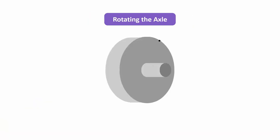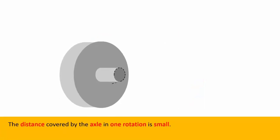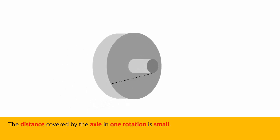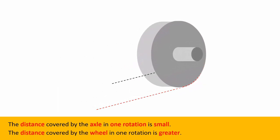Now, what if we turn the axle instead of the wheel? Consider this wheel with this axle attached to it. When the axle completes one rotation, the wheel does as well. But when the axle completes one rotation, the distance covered is small as the axle's diameter is small. On the other hand, one rotation of the wheel covers a larger distance compared to the axle.